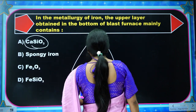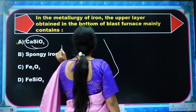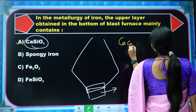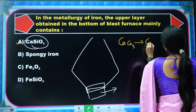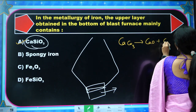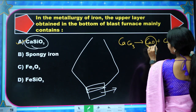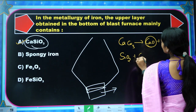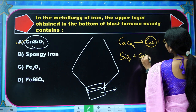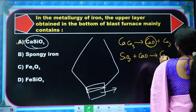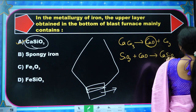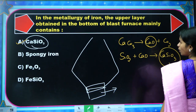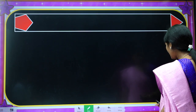On top of the pig iron, we got slag. Slag is nothing but calcium silicate (CaSiO₃). How is the slag formed? CaCO₃ is heated to give CaO plus CO₂. CaO is our flux — a substance added to remove impurities. It reacts with SiO₂ to form CaSiO₃, which is our slag. So option one is the correct answer.